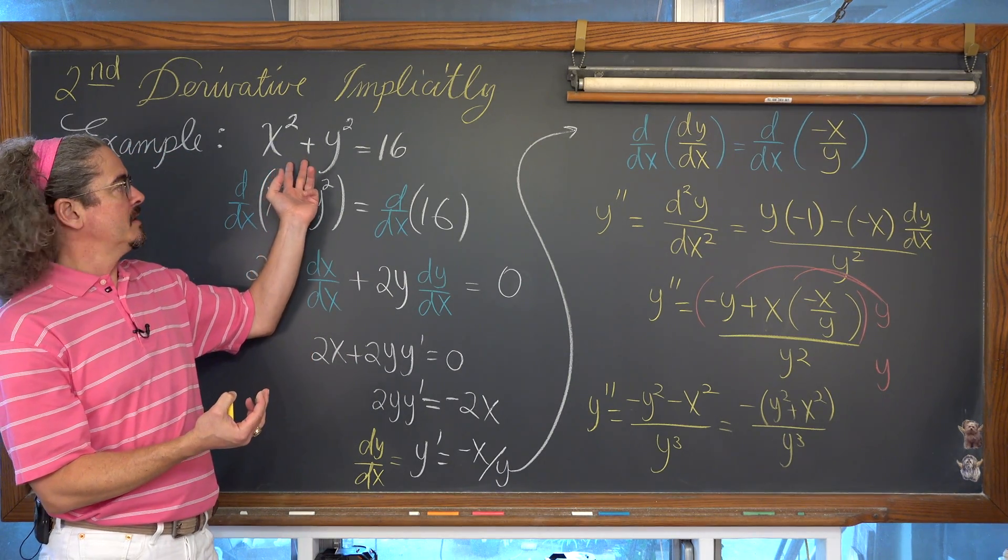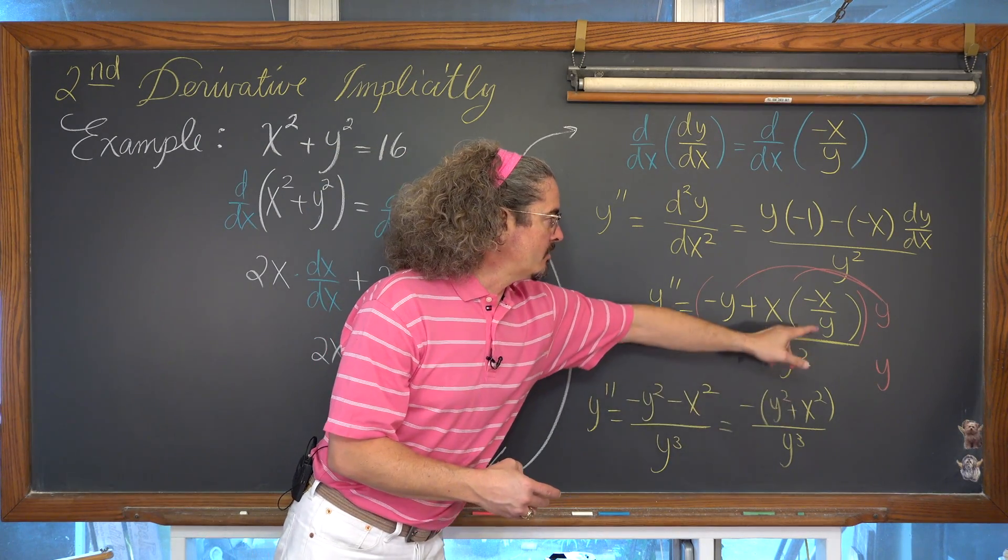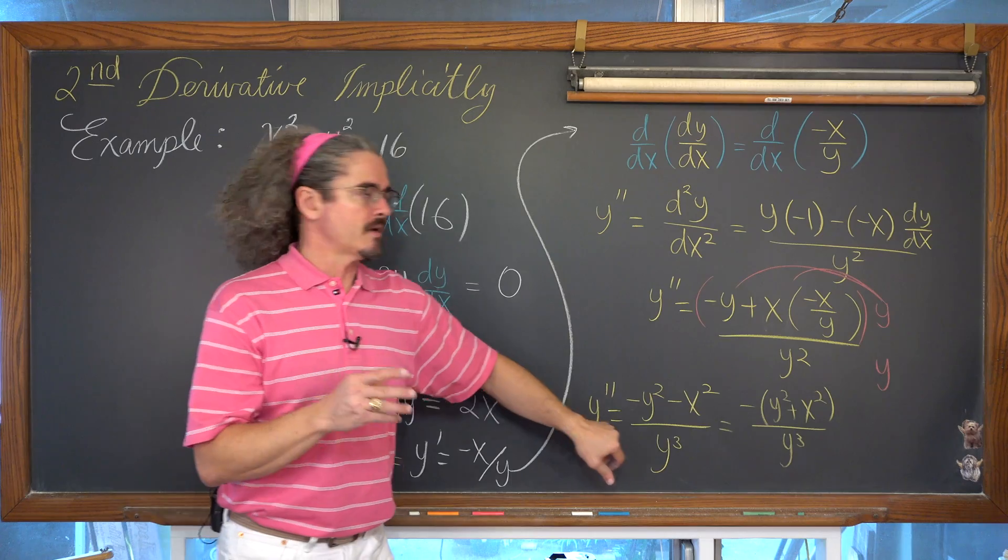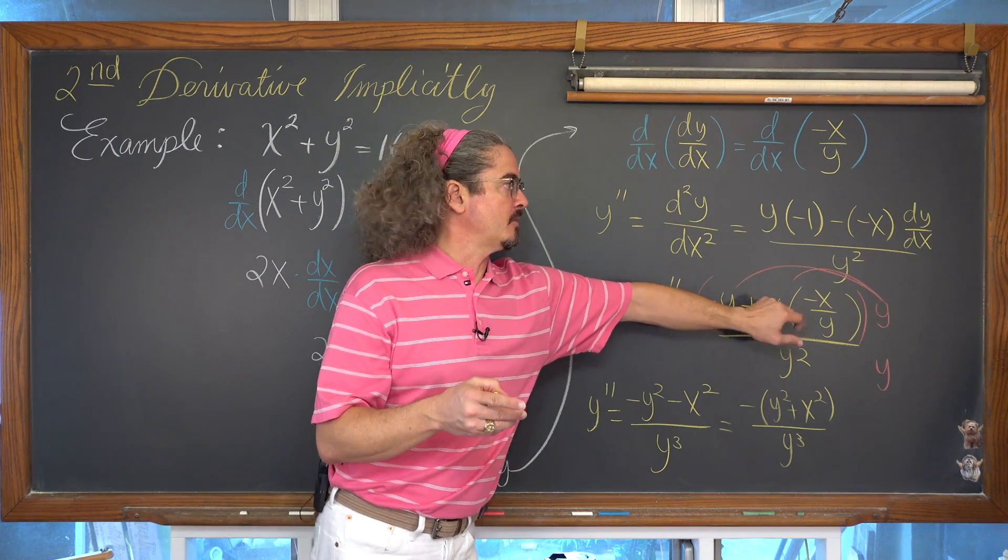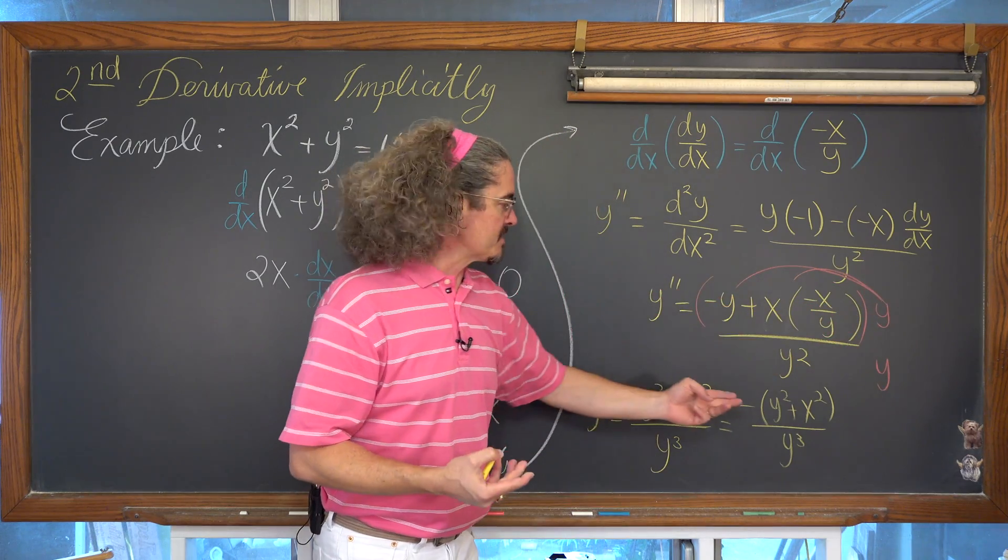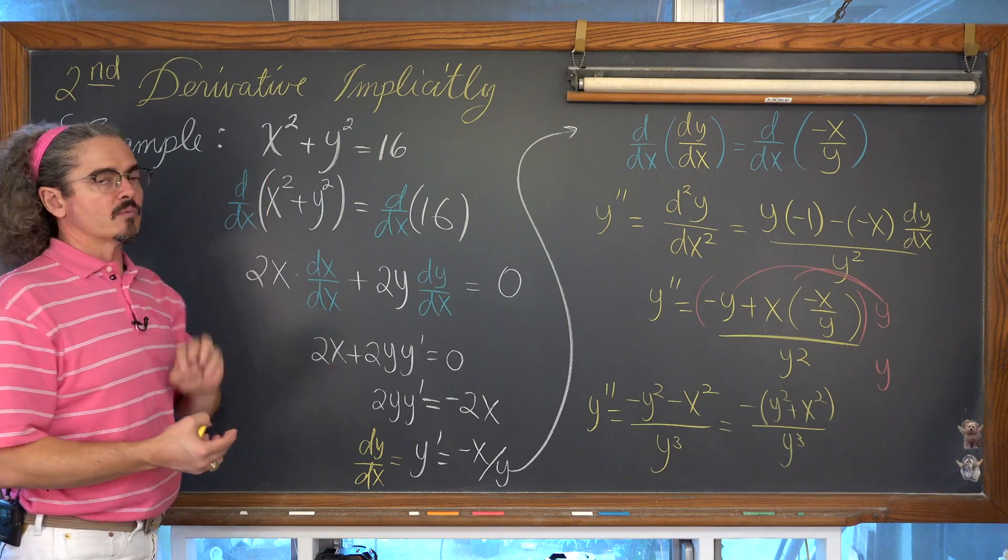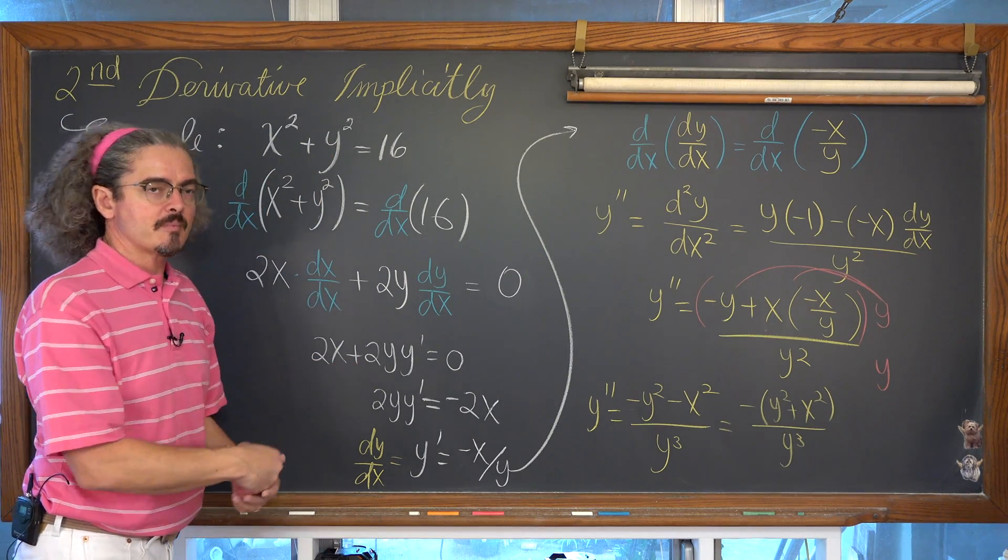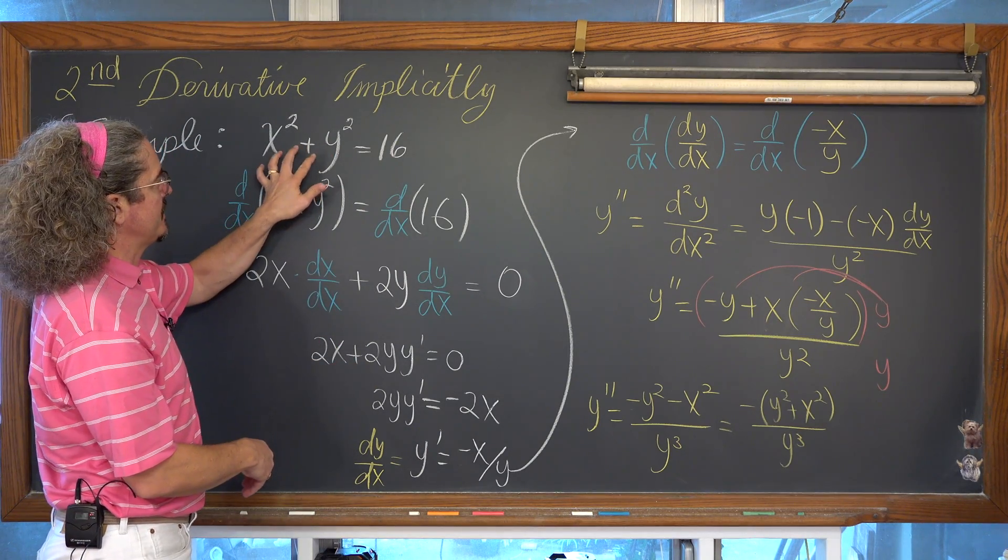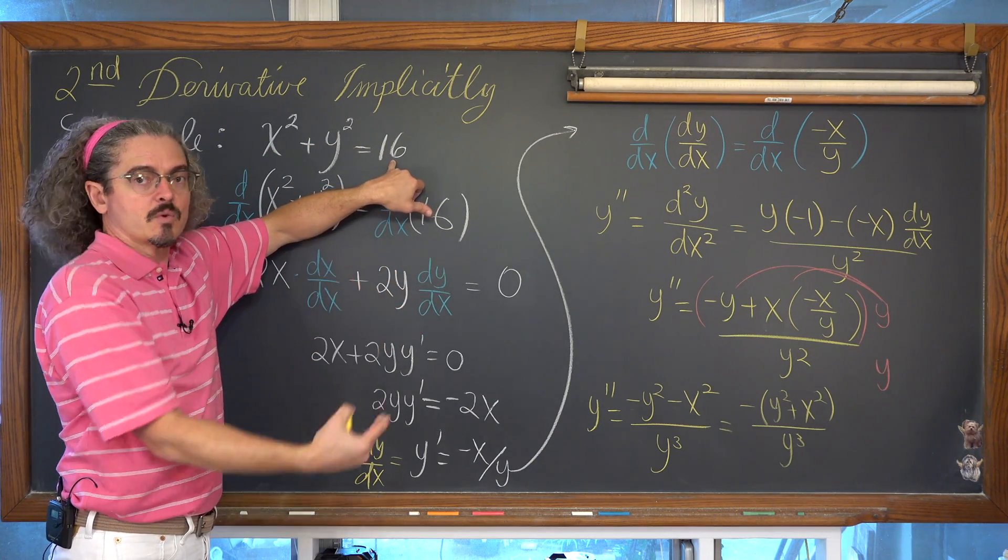x squared plus y squared is equal to 16. So it turns out here that when we go to write our second derivative, not only do we have to take out with substitution, remove that first derivative notation, but you might just find that the answer lends back and goes back to that original problem and also gives another opportunity for substitution.